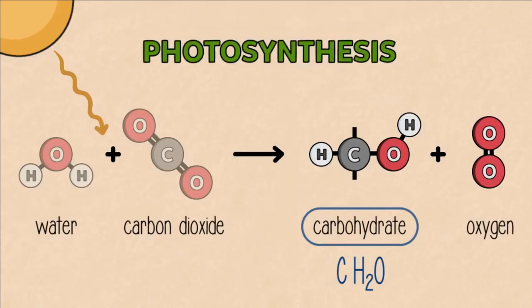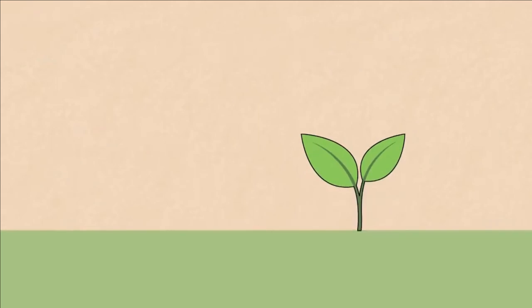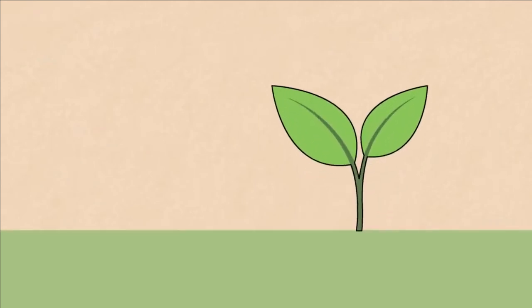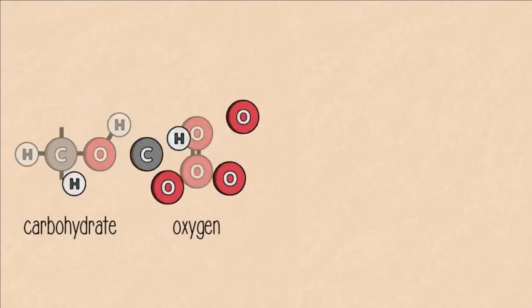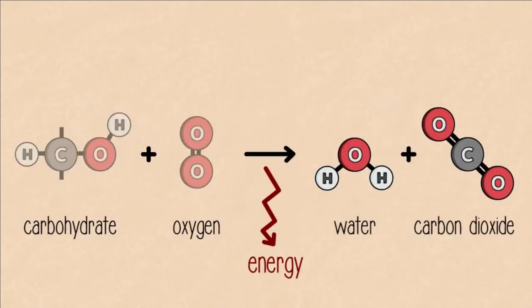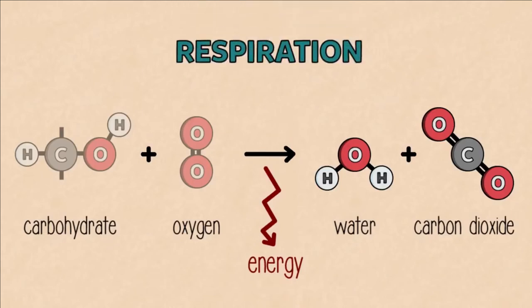That's photosynthesis. Energy is now stored, and living things can use the carbohydrates to build their bodies and structures. To obtain energy, they simply reverse this reaction, letting the oxygen and the carbohydrate rejoin, forming carbon dioxide and water all over again, and this is respiration.